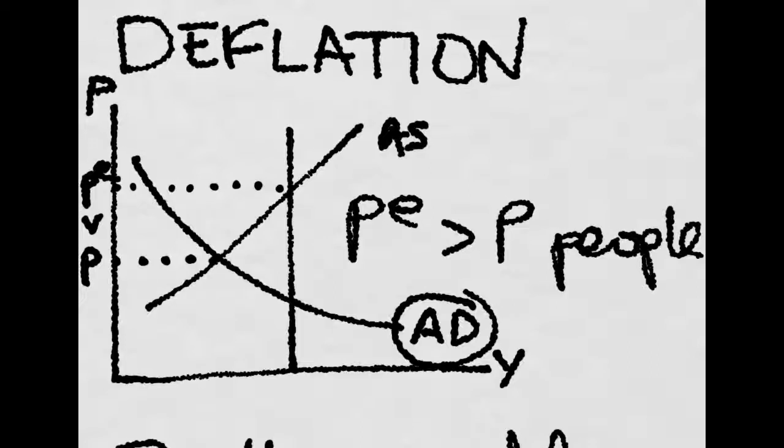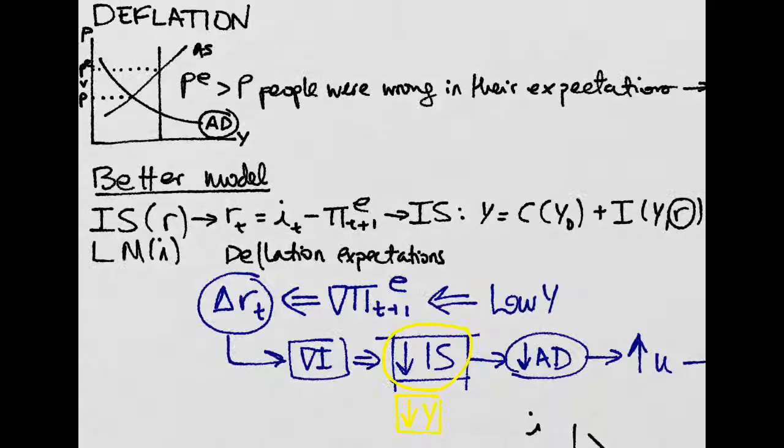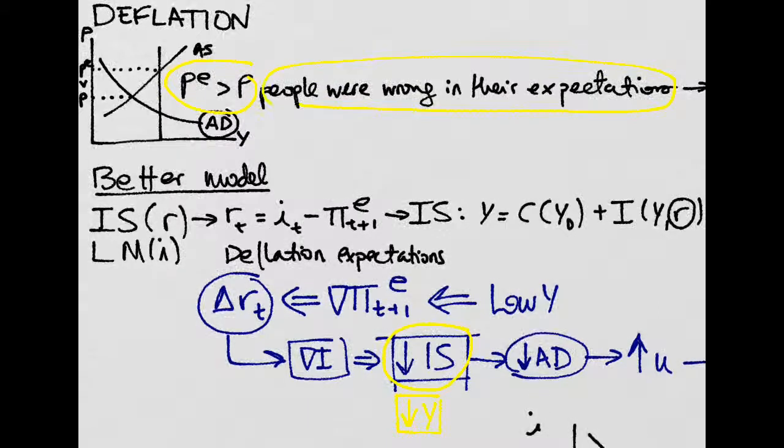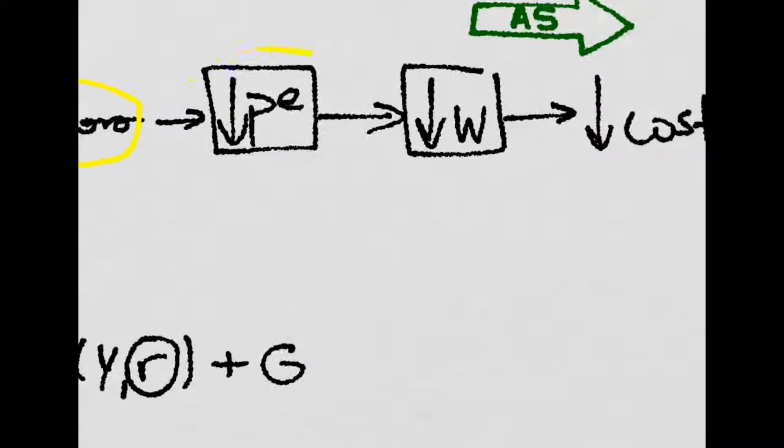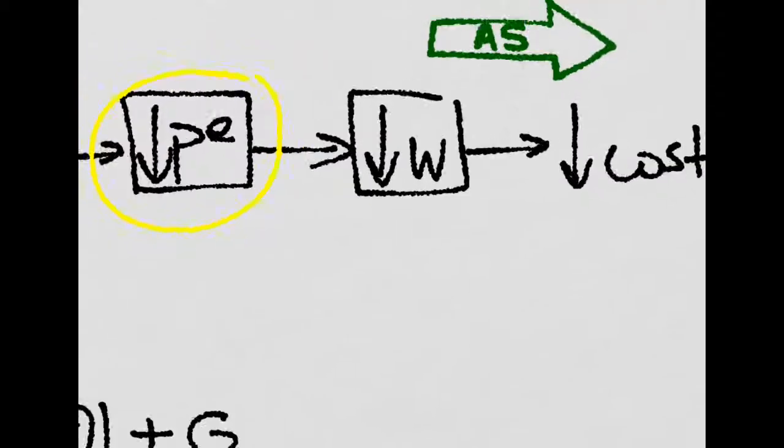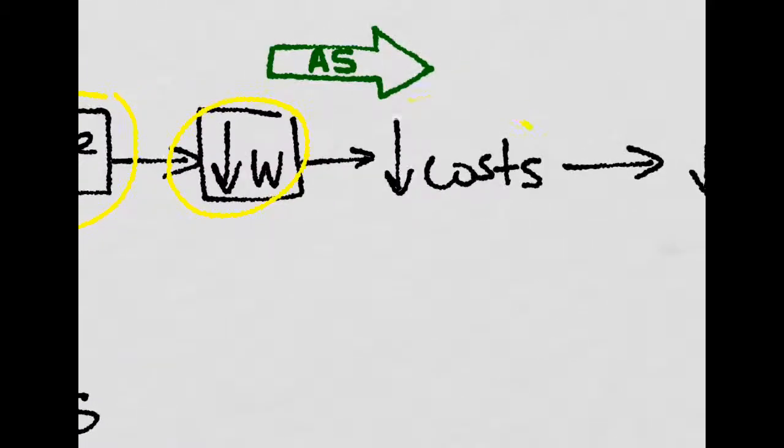But if they do that, they will also lower their nominal wage, and that lowers the costs faced by firms, which is really good for them. So it shifts their aggregate supply to the right, and that decreases prices.